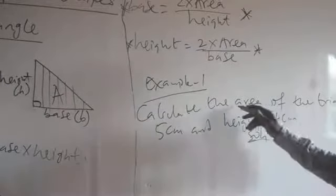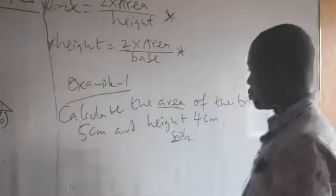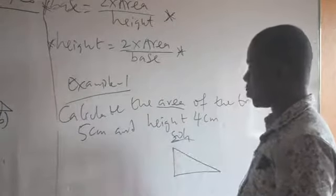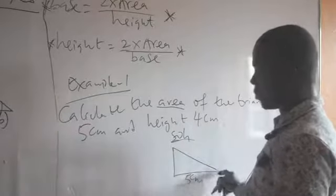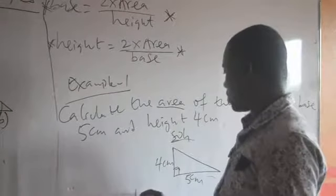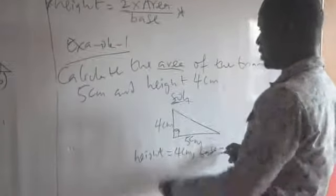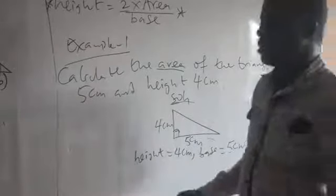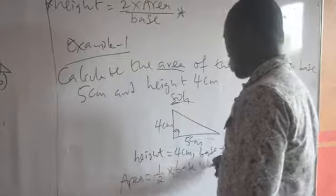Calculate the area of the triangle — they ask you to find the area. Let's just sketch a triangle. This is the triangle. The base — the bottom part of the base — is 5 cm. The height is from here to here, this perpendicular side. The height is 4 cm. So from the question: height equals 4 cm and base equals 5 cm. Now we use the area formula: area equals one-half times base times height.